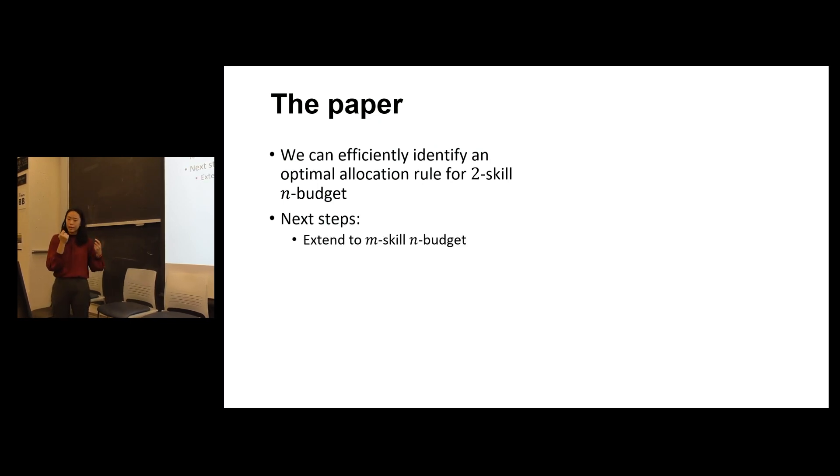As for our next steps, we're thinking about extending our model to also include the case when the students have M skills and N budgets. We also want to introduce uniform subsidies and study the effects of them on students' budgets. And further, we want to see what are the effects if we allow the students to take the test multiple times.